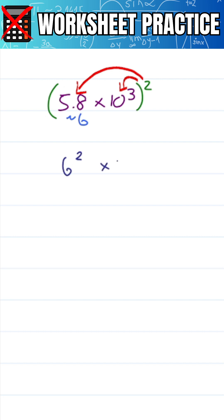6 squared times 10 to the third squared. 6 squared or 6 times 6 is 36. 10 to the third squared simply means you multiply the two powers, giving you 10 to the sixth. And now all you have to do is turn it into proper scientific notation.